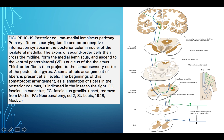Due to spinal cord injuries, information comes into the ipsilateral spinal cord, travels up to the caudal medulla, decussates — that's why it's called the medial lemniscal pathway — and then travels up through the VPL thalamus to the contralateral parietal lobe. Ipsilateral spinal cord, up to caudal medulla, cross over at the medial lemniscus, then up to the contralateral cortex.